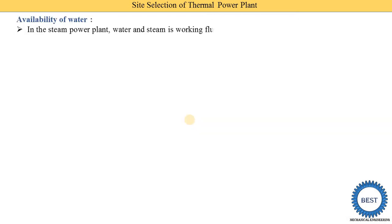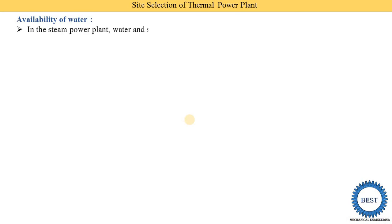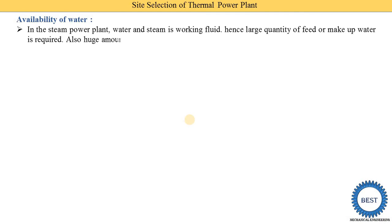Second point is the availability of water. In a thermal power plant, in the boiler we supply water and it is converted to steam — so water is the main substance. Coal is also the main substance. Water is also required for cooling in the condenser and even in cooling towers. So in a steam power plant, water and steam are the working fluids, and a large quantity of feed or makeup water is required.